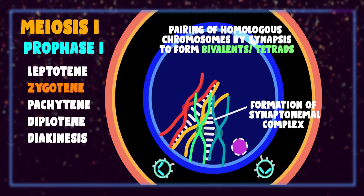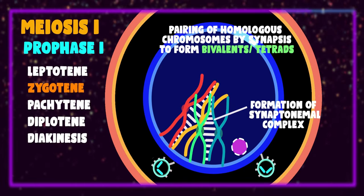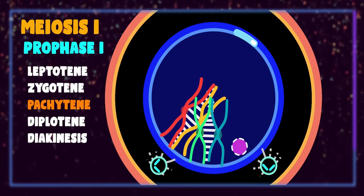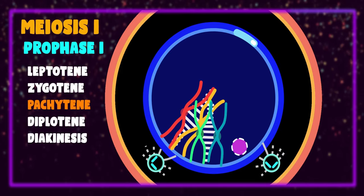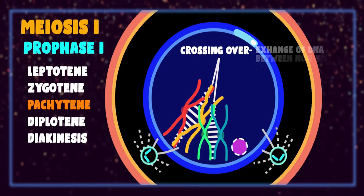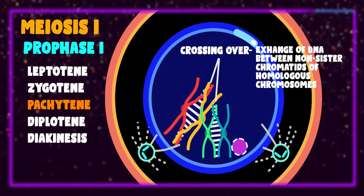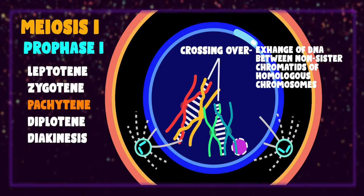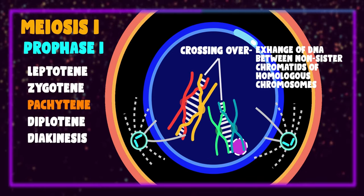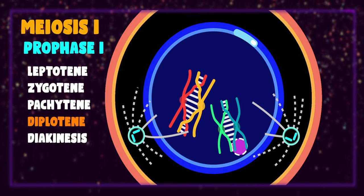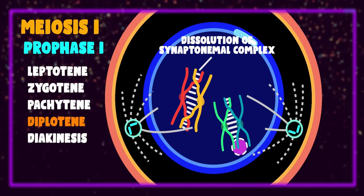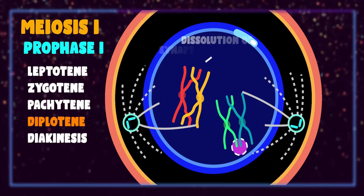In pachytene, the exchange of DNA between non-sister chromatids of homologous chromosomes occurs. This event is called crossing over, which is responsible for variations in characters of sexually reproducing organisms. At the site of crossing over, several enzymes and proteins aggregate resulting in formation of recombination nodule. Crossing over completes in pachytene, and in the next stage the synaptonemal complex is dissolved.